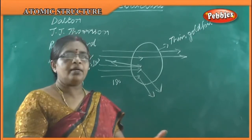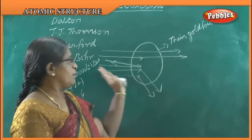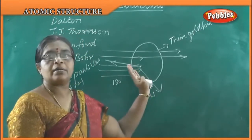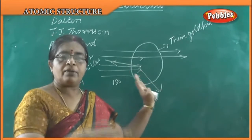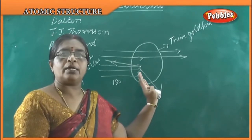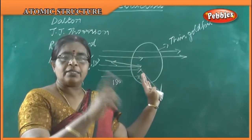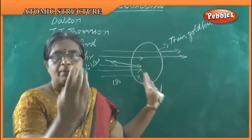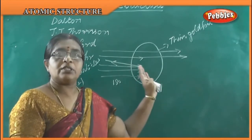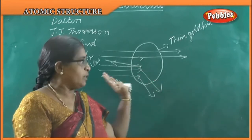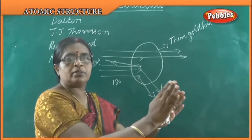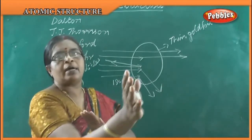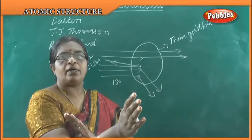He found that some of the particles are getting deflected and some are going through the atom. So there must be some other charged particle inside the atom which is causing the deflection. In the positive region of the atom, the charge passing through gets deflected away.